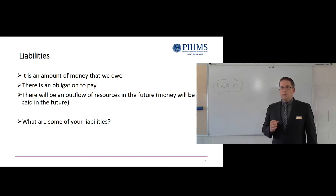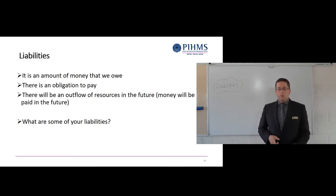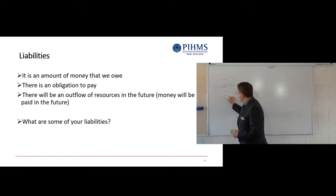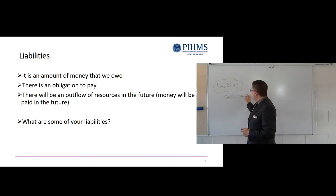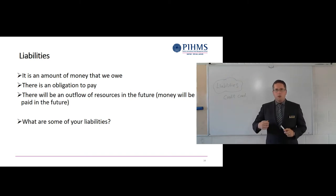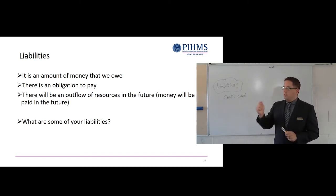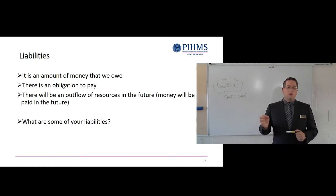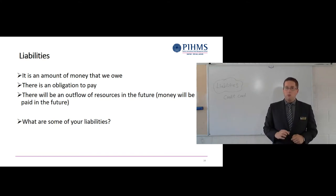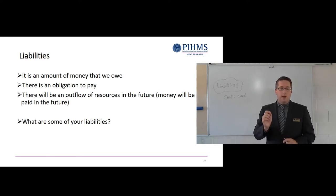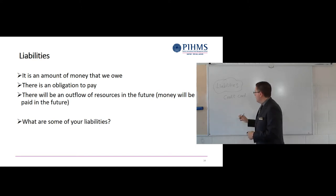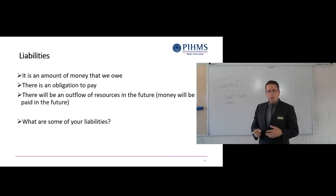If it meets any of these criteria then it's likely to be a liability - something that you owe. You can personally have liabilities. Some of the liabilities that you might have include a credit card, where you can buy anything you like but you have to pay that money back. It's an amount that you owe, there's an obligation to pay it, and it's going to be paid in the future - so a credit card is absolutely a liability. Some people also have loans from a bank, for example to buy a car - that again is a liability.